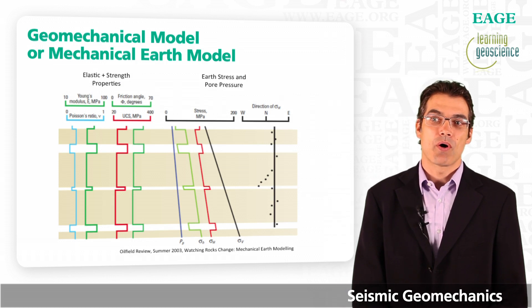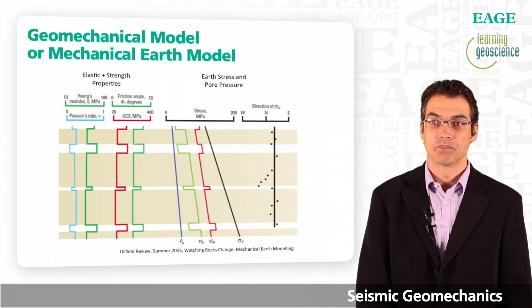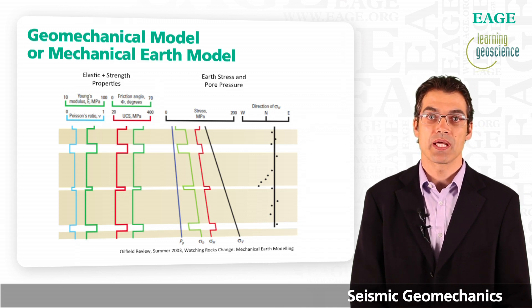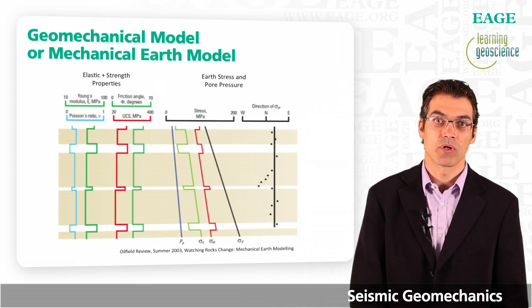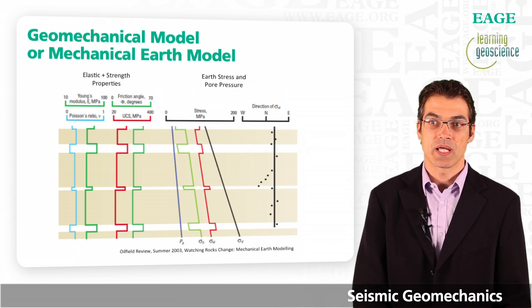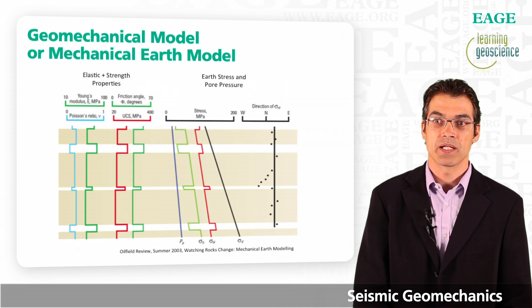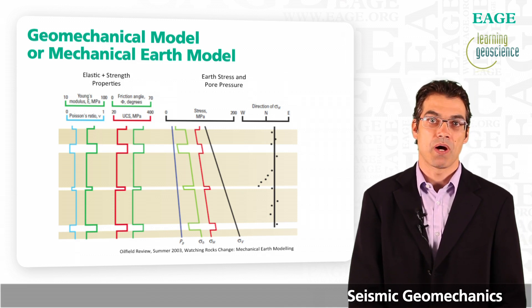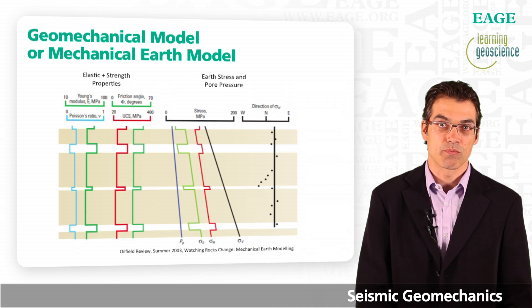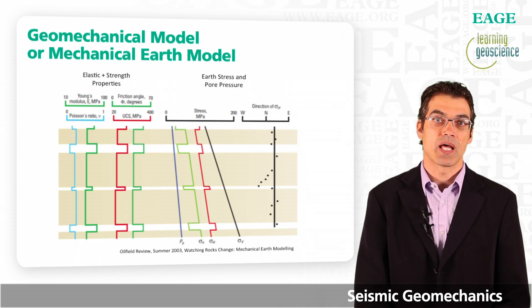What are the components of a geomechanical or mechanical earth model? Independent of whether you are building a geomechanical model in 1D or 3D, you will always have the same components. As you can see on the top of the slide, there are two parts: the elastic and strength properties, and the earth stresses and pore pressure.